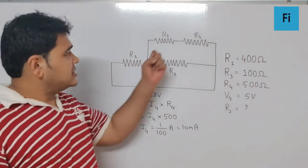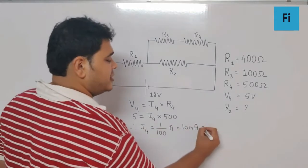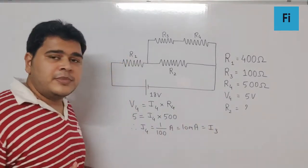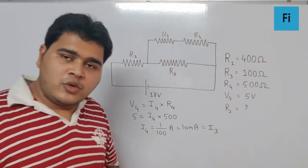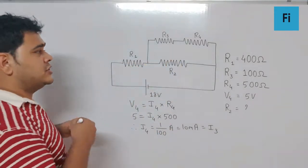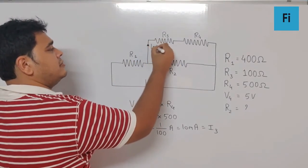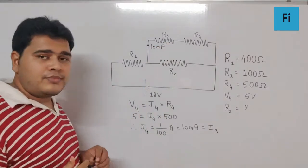Now definitely, since R3 and R4 are in series, we can say I4 will also be equal to I3. The same current will flow through both resistances. Now, we know over here in this branch, we are getting the current of 10 milliampere.